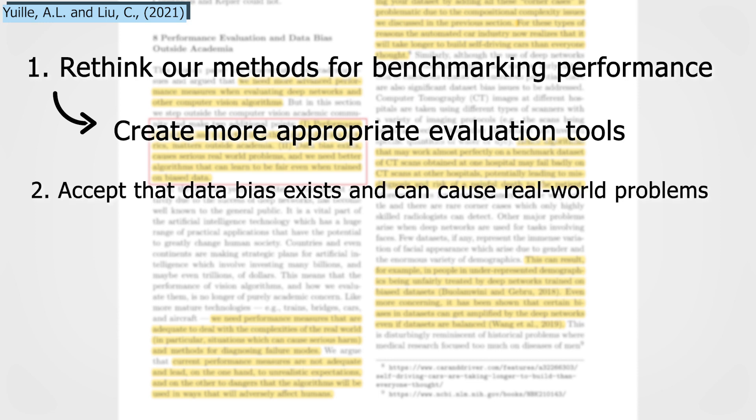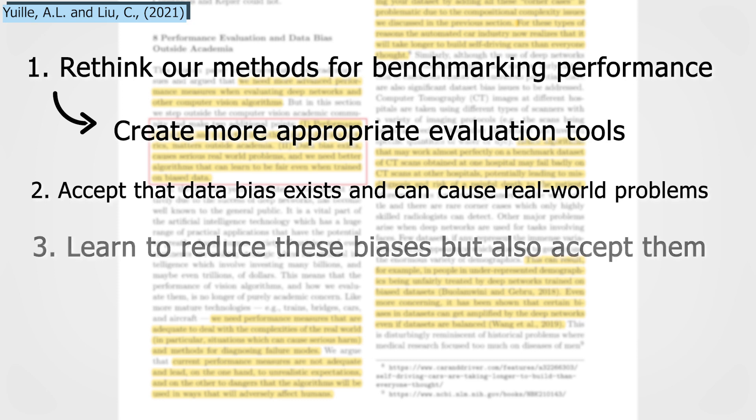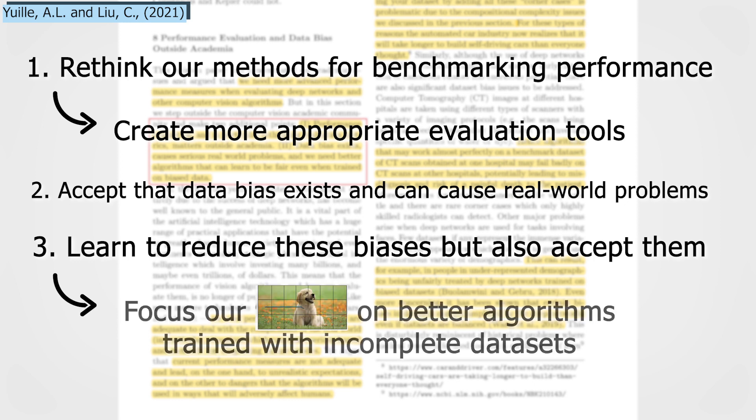We also have to accept that data bias exists, and that it can cause real-world problems. Of course, we need to learn to reduce these biases, but also to accept them. Biases are inevitable due to the combinatorial complexity of the real world, that cannot be realistically represented in a single dataset of images yet. Thus, focusing our attention, without any play of words with transformers, on better algorithms that can learn to be fair, even when trained on such incomplete datasets, rather than having bigger and bigger models trying to represent the most data possible.